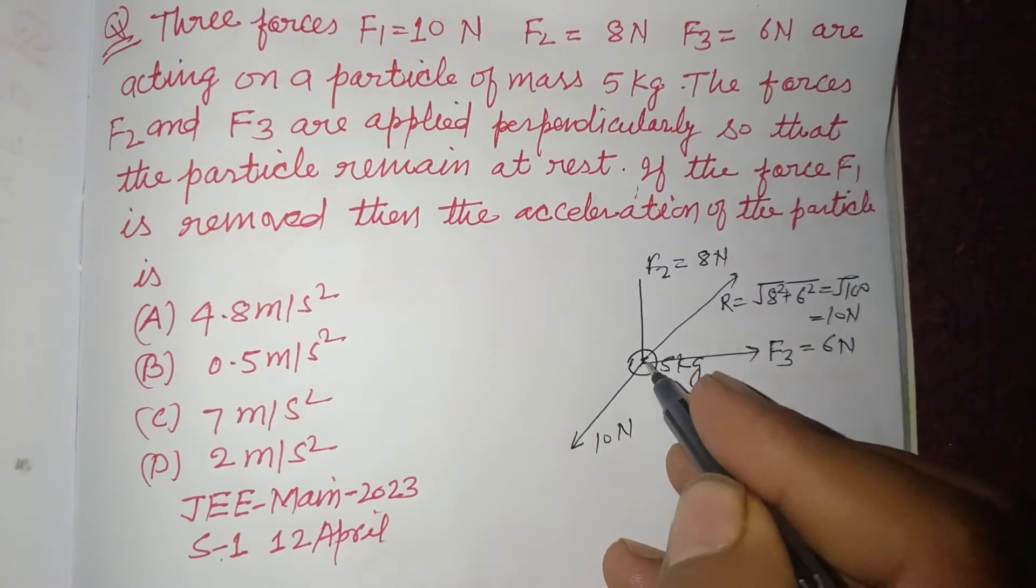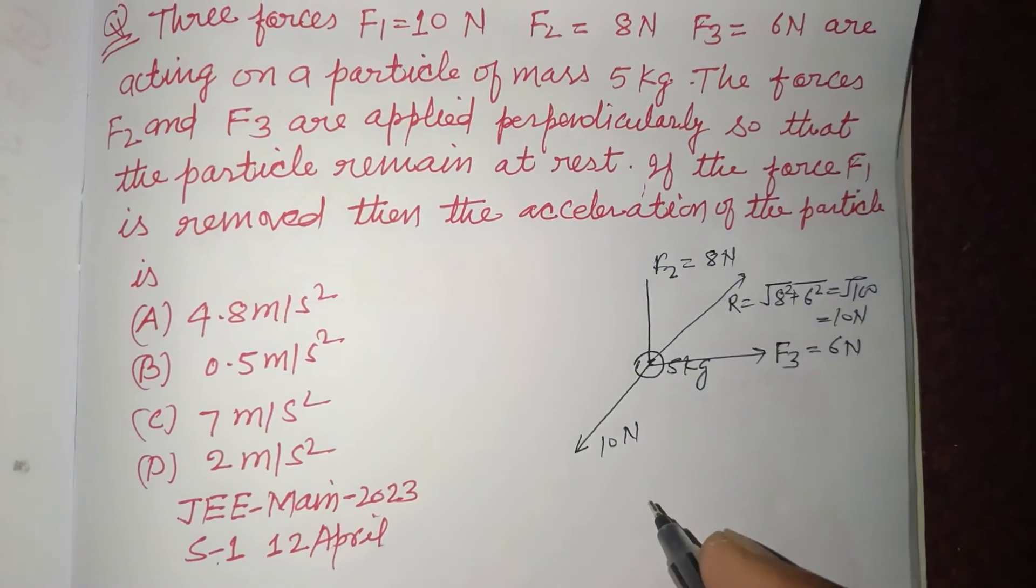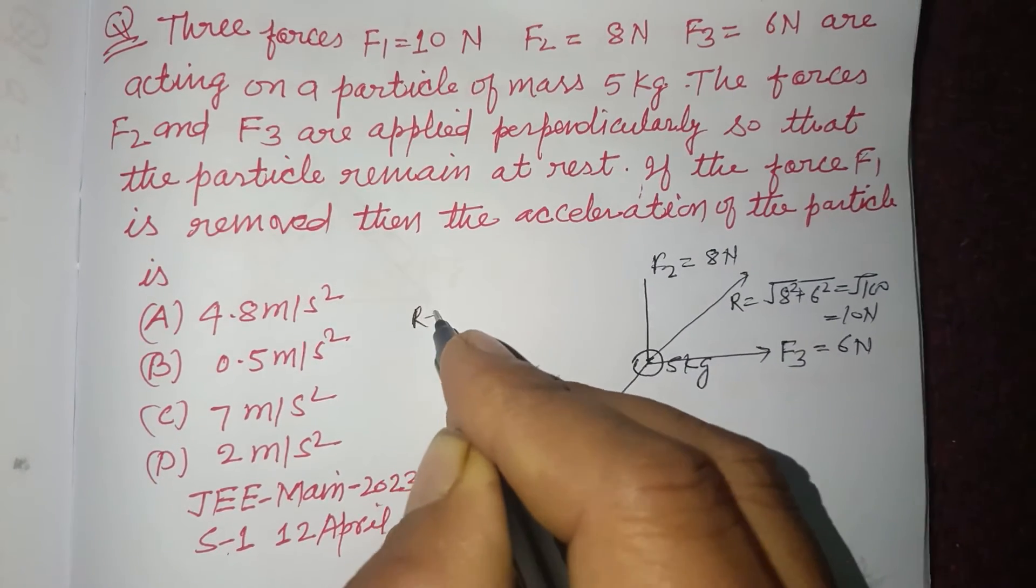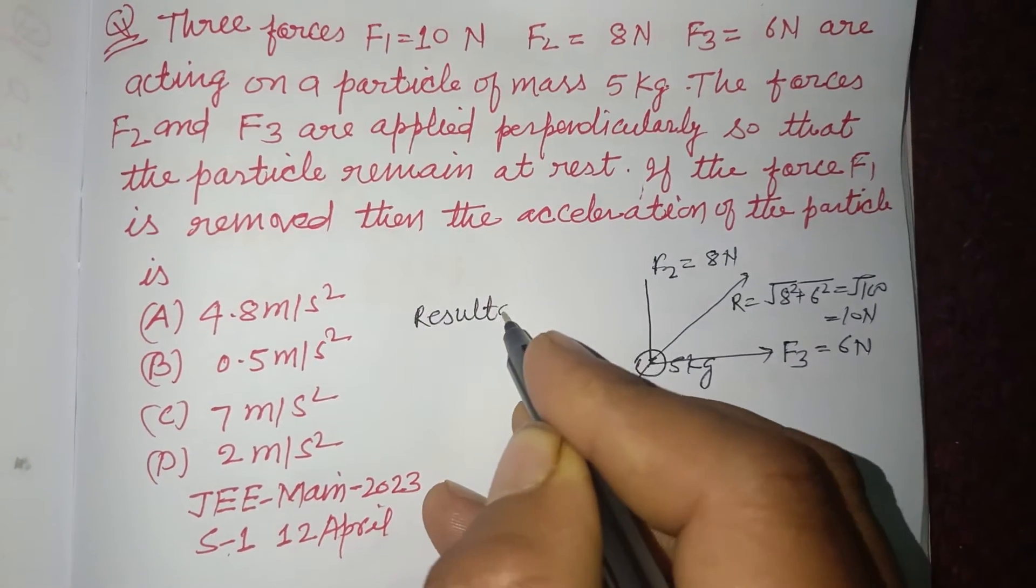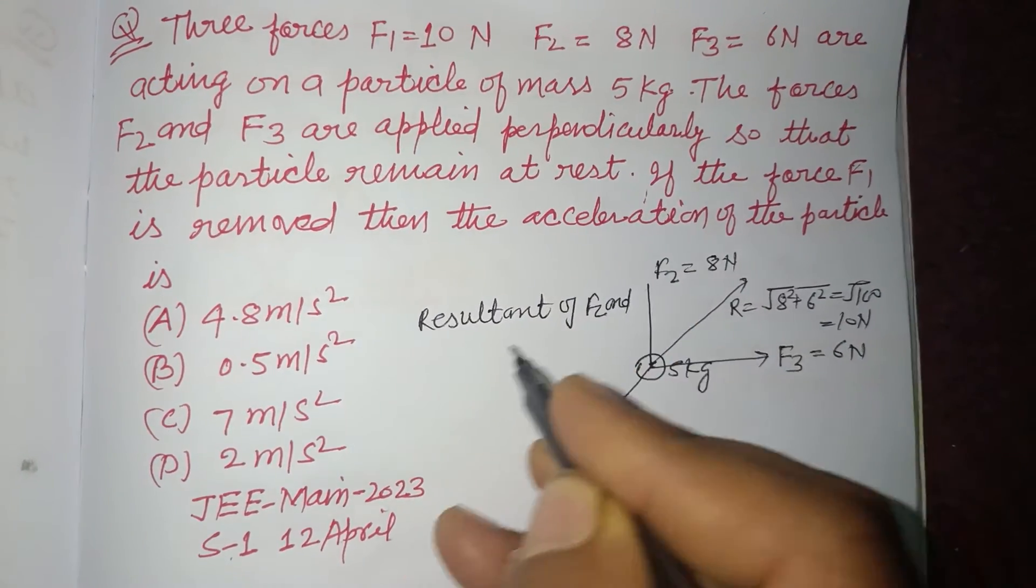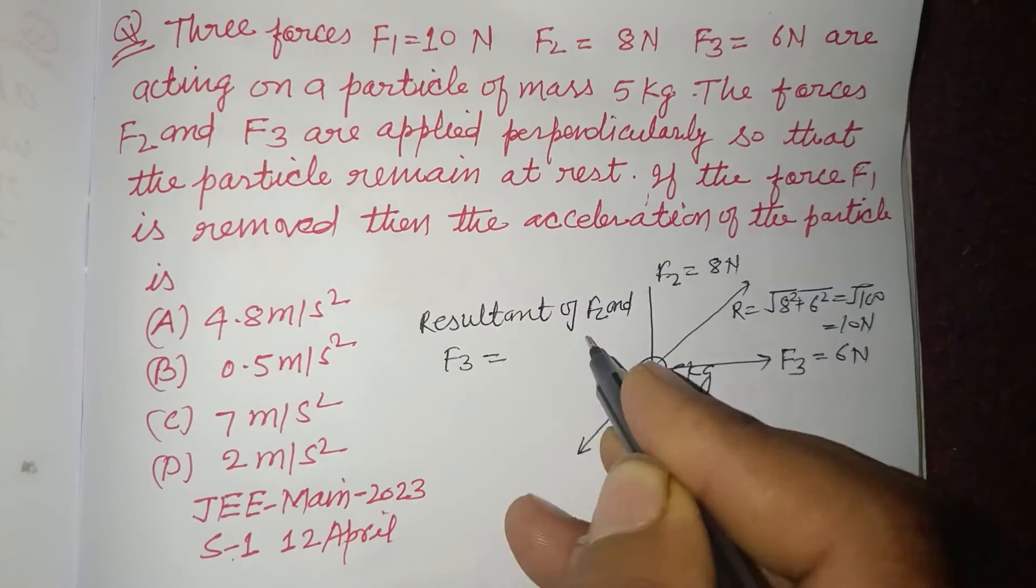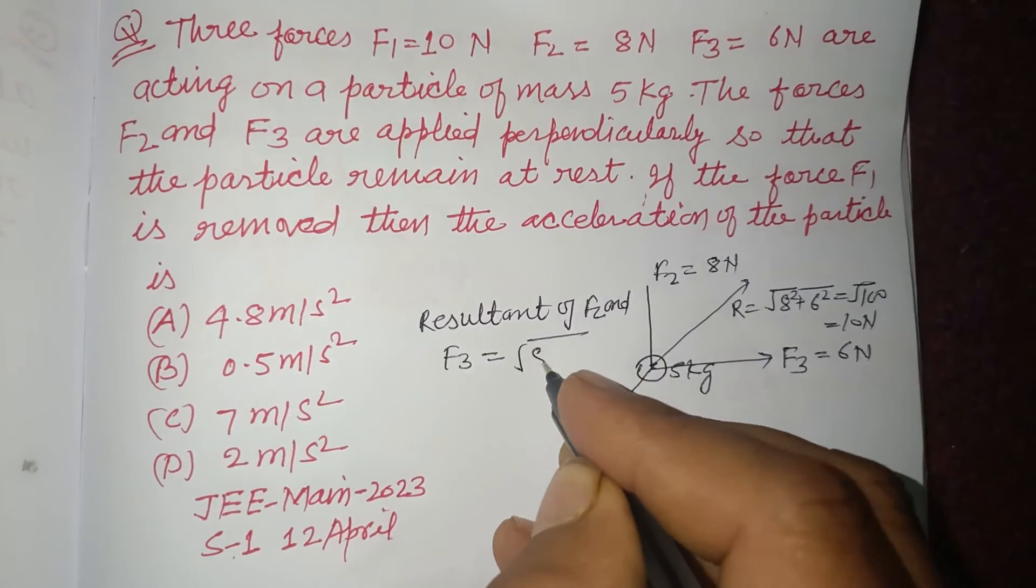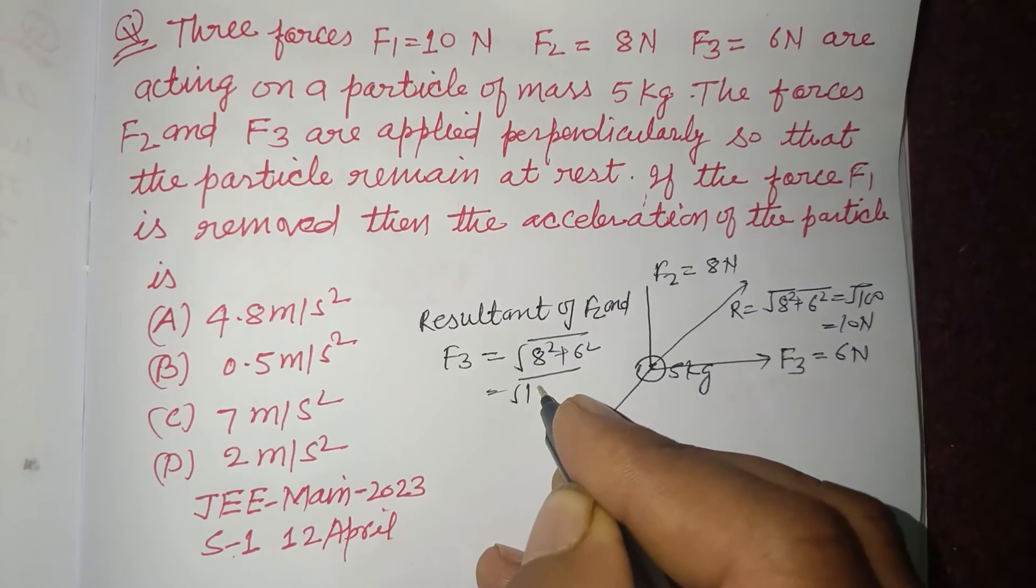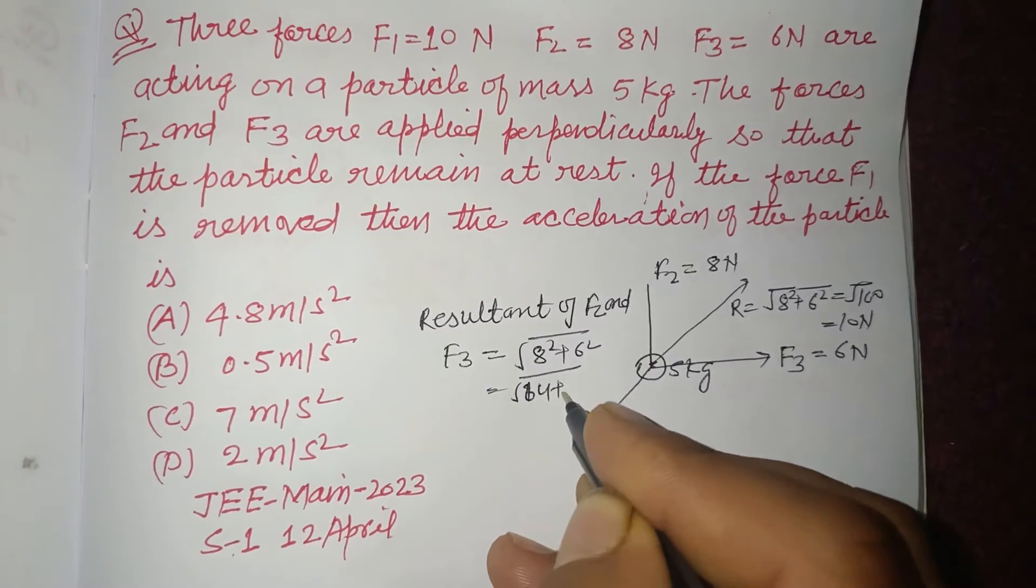and the particle remains in equilibrium. So the resultant of F2 and F3 which are mutually perpendicular: 8 squared plus 6 squared, that is 64 plus 36